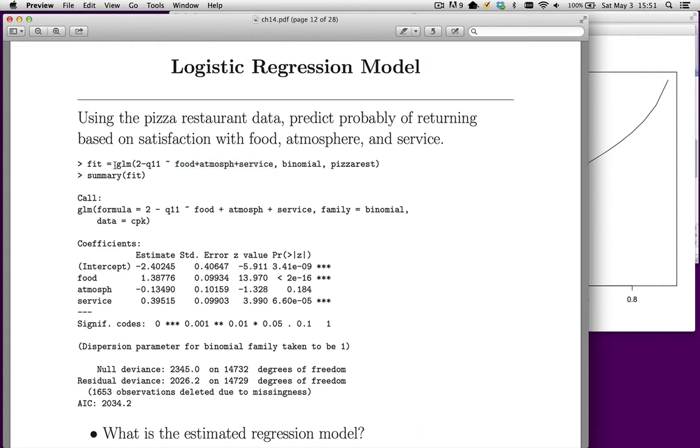We'll use GLM again. I'm going to take two minus the dependent variable. The reason is one has to mean yes, zero has to mean no—the data came to us in a form that wasn't that way, so two minus fixes that. The equation looks the same as what you're used to. List all your predictor variables separated by operators on the right-hand side of the tilde. We want logistic regression, which means binomial errors. Along with binomial errors, we get the logit function. Then we use the pizzarest dataset.